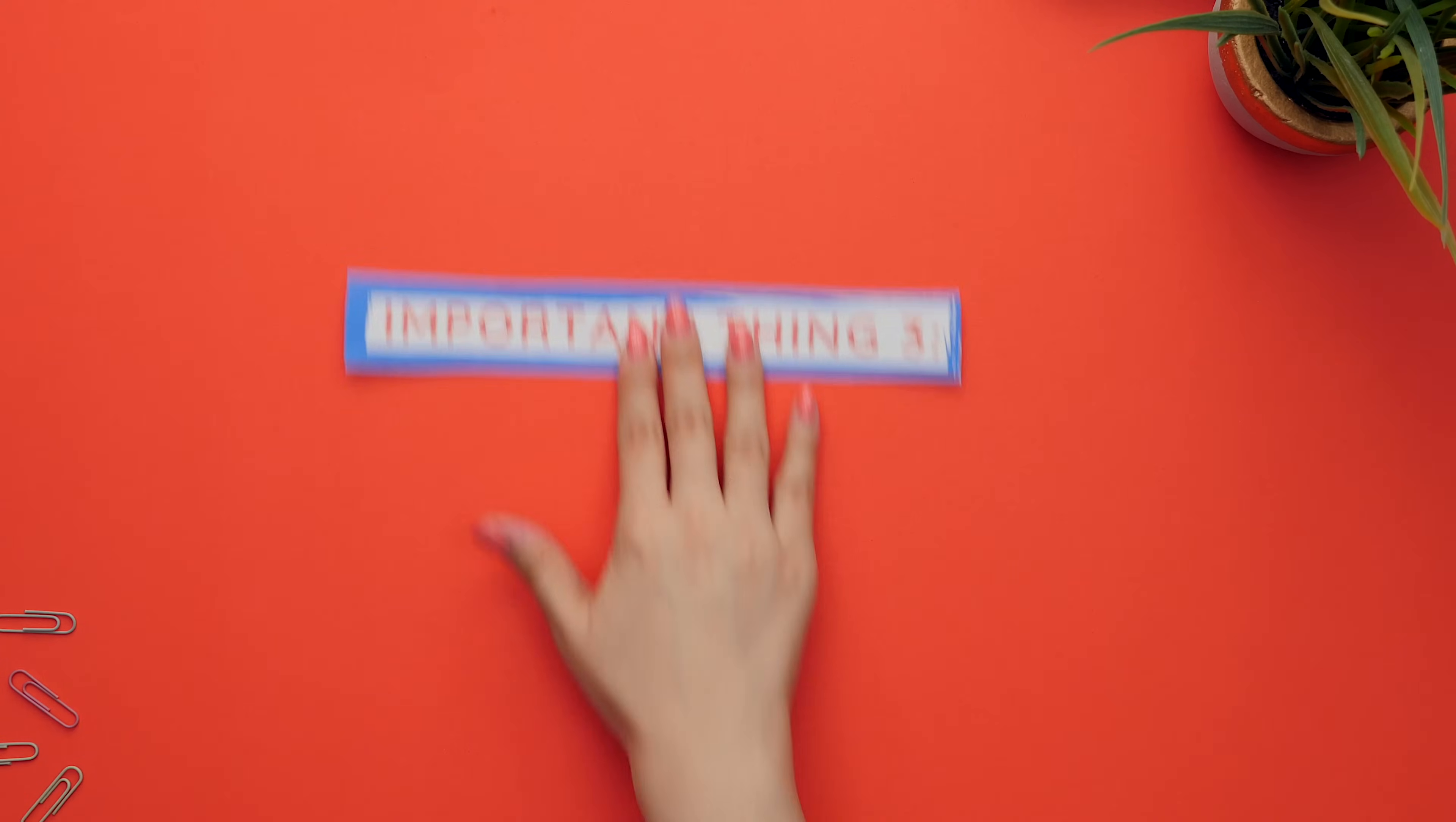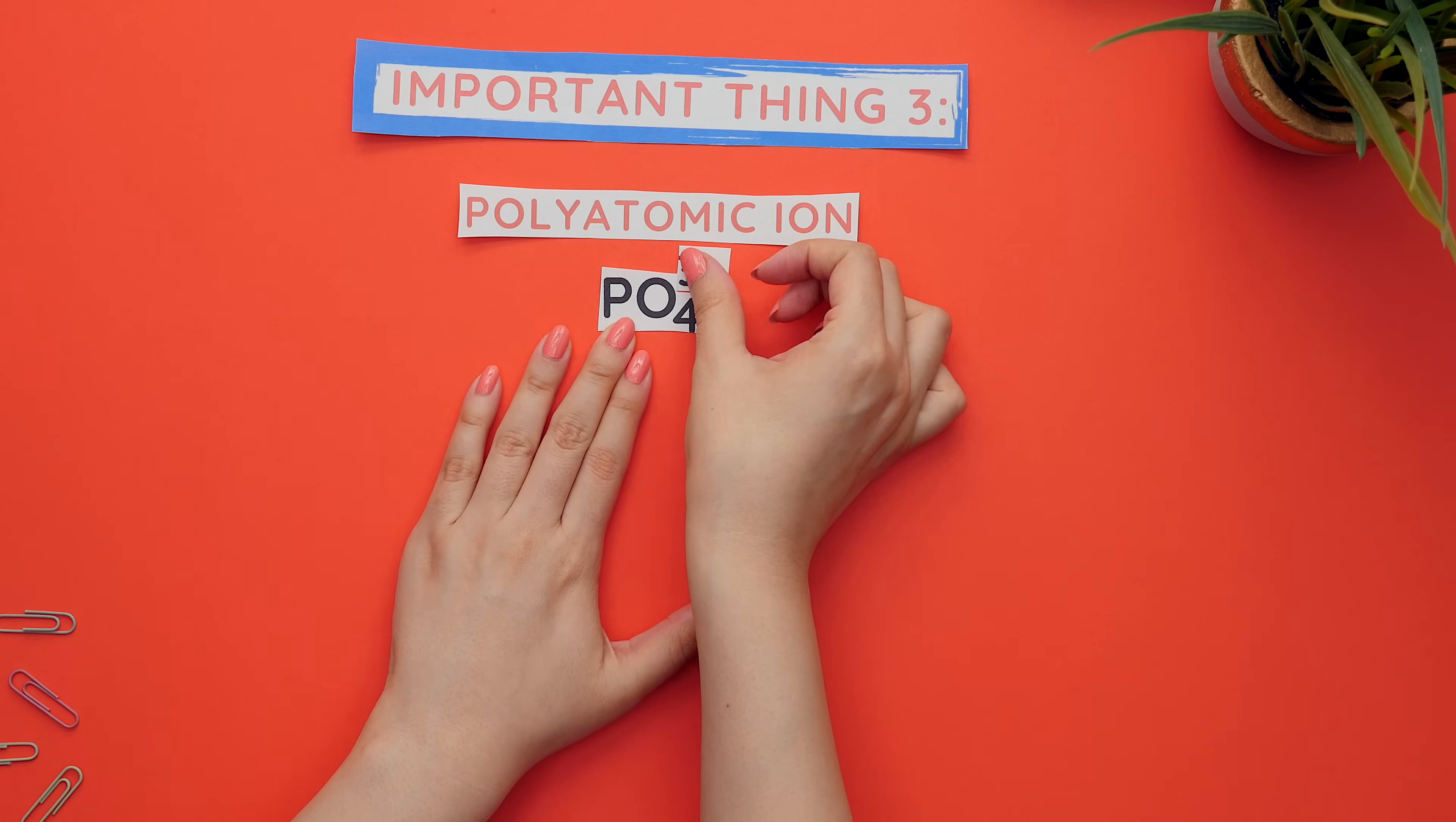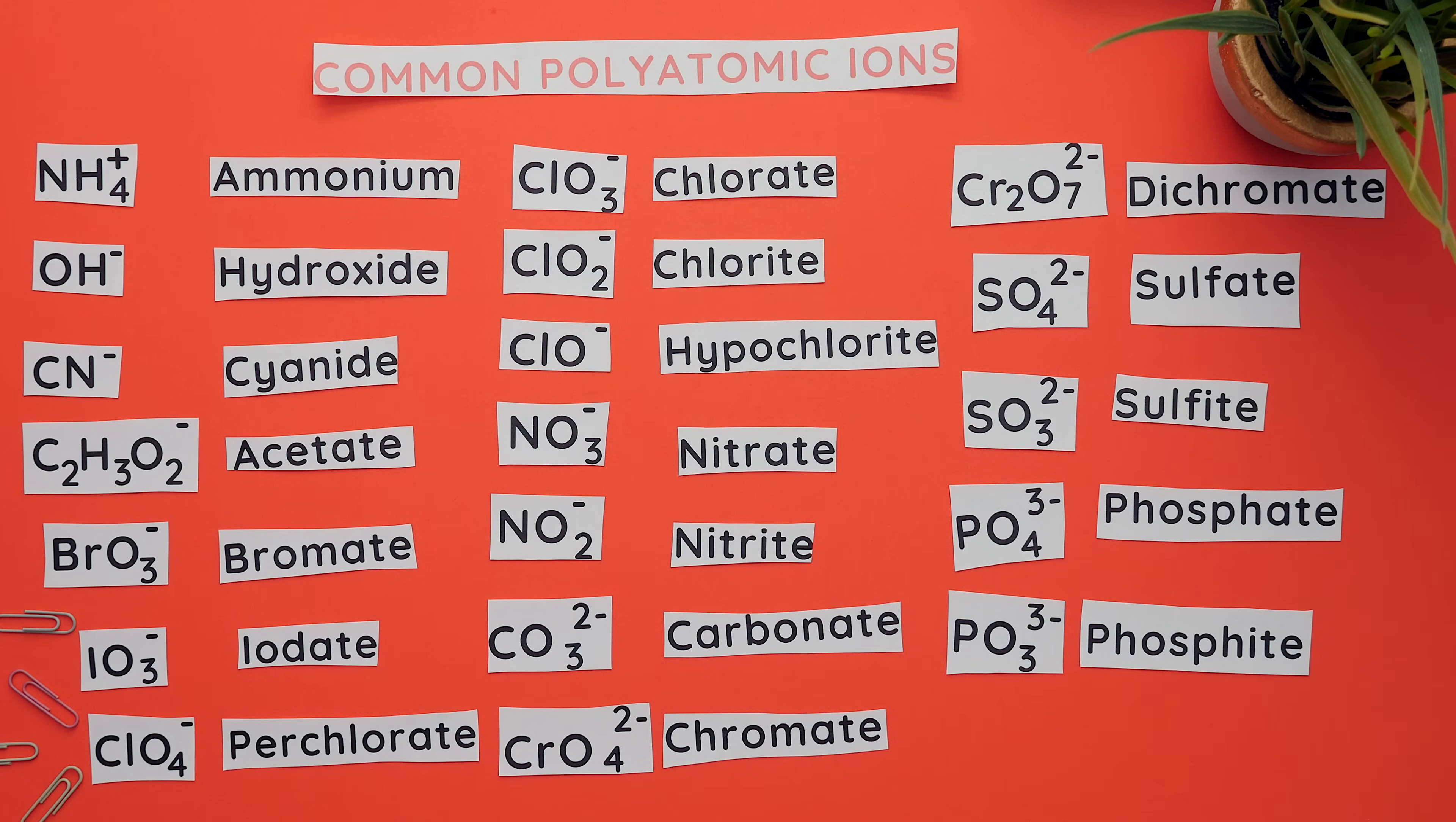Important thing three: polyatomic ions - polyatomic meaning it's composed of two or more atoms, an ion meaning it has an overall charge. Here's a list of common polyatomic ions you will need to know, and your teacher should also provide you with a list.